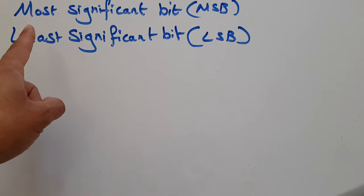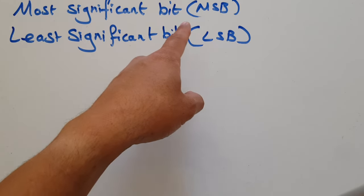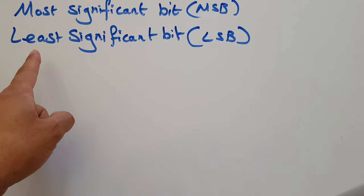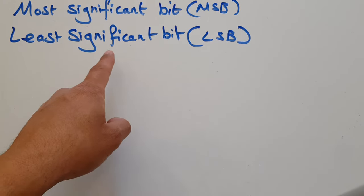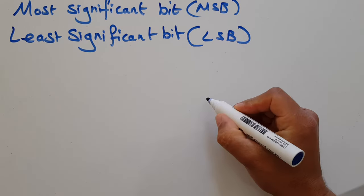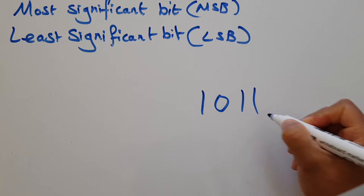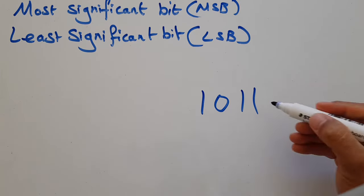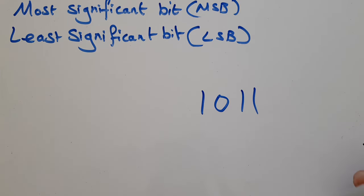This video is about the most significant bit or MSB and introducing the idea of the least significant bit or the LSB. We're working with binary. Here is a nibble or 4-bit binary: 1, 2, 3, 4. 4-bit binary also known as a nibble.